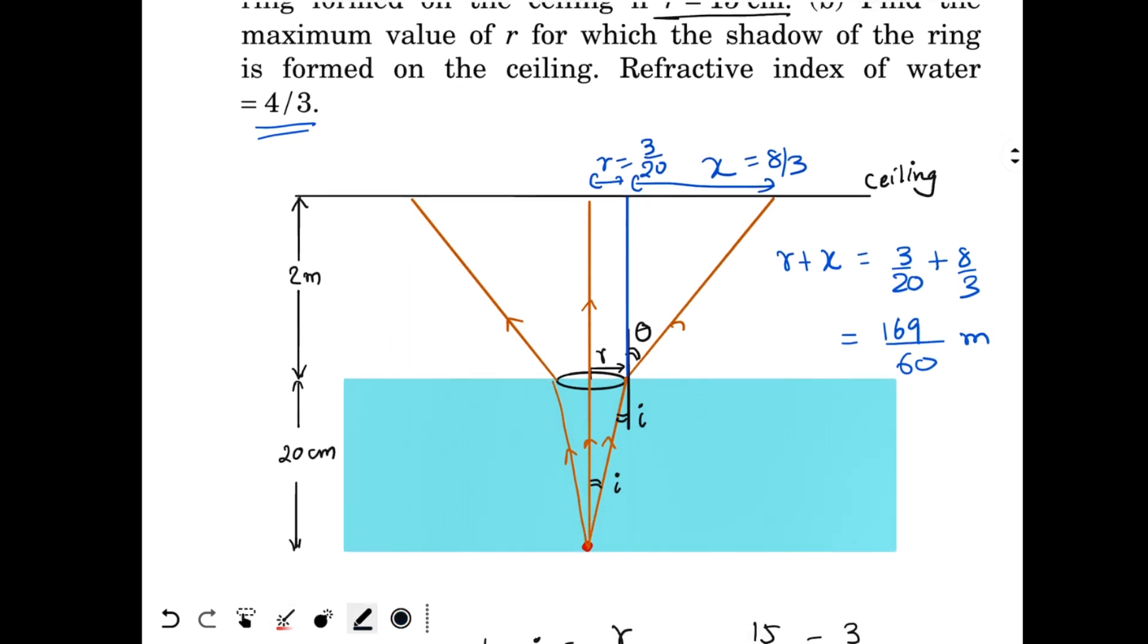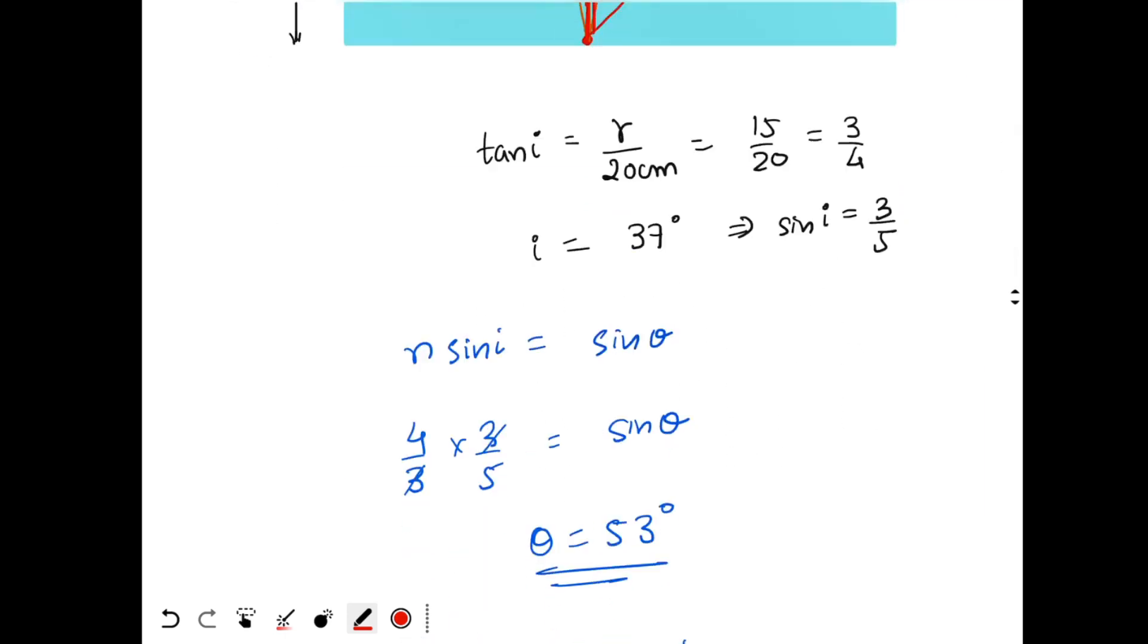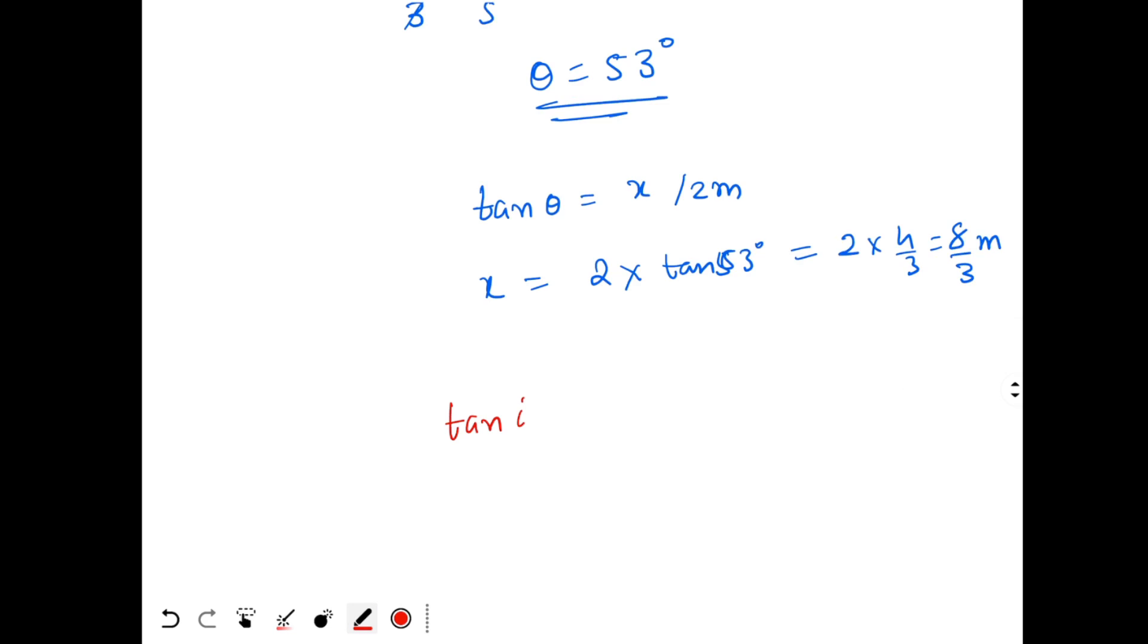The angle of incidence of the light should be less than critical angle. That's it. So if I draw another ring over here, this angle of incidence should be less than critical angle. And then I just look at this triangle. So this is I means this will also be I. So tan I will be r by 20 centimeters. Again tan I will be r by 20 centimeters.